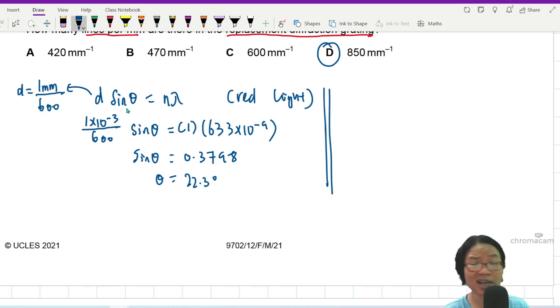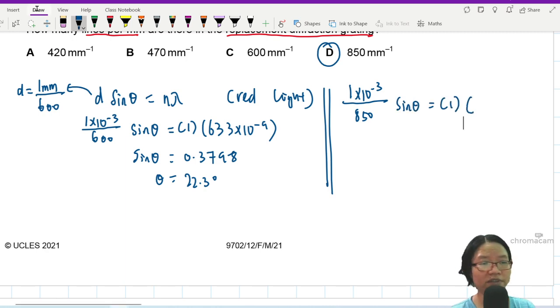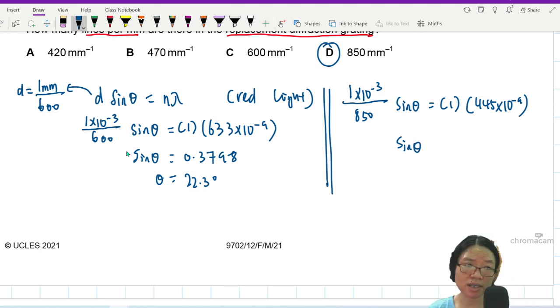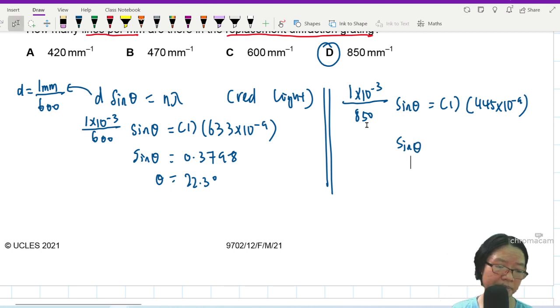I can repeat for blue. Of course, I just found the answer for blue and I want to check my answer. So for blue, 850, everything else is the same. Sine theta equals 1 times wavelength of blue light was 445. So you can put 445 here. And from the working, you can tell this is why we can use ratio. Because we are substituting a lot of same values that will cancel out when we divide them. So just by quickly changing some numbers in my calculator.